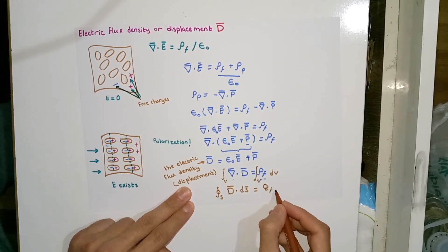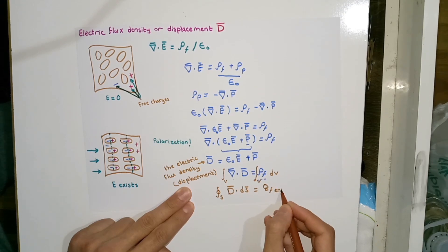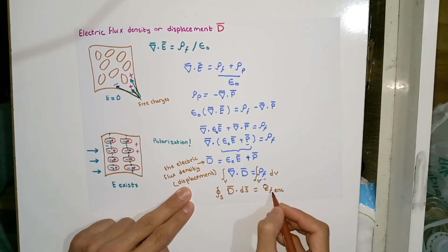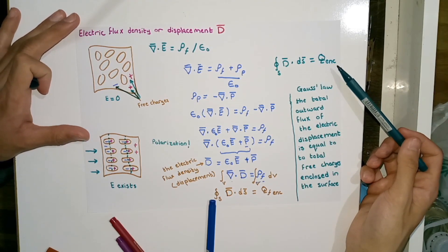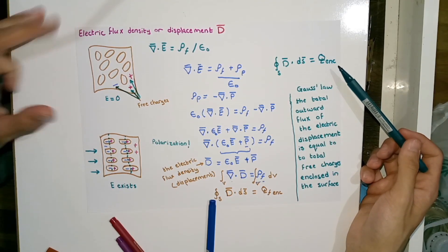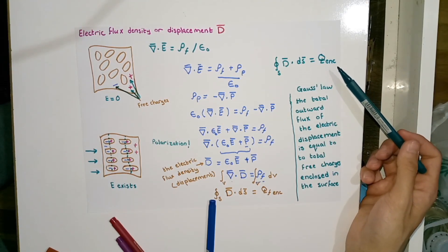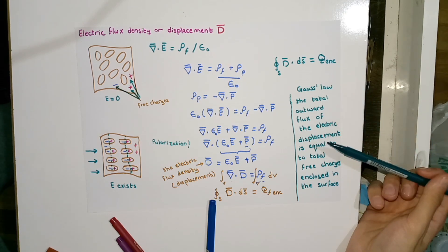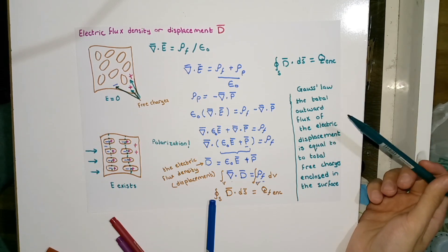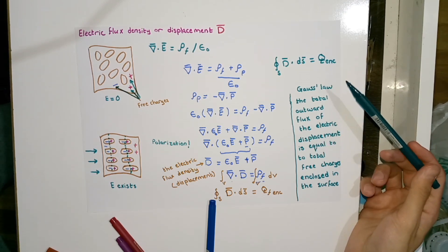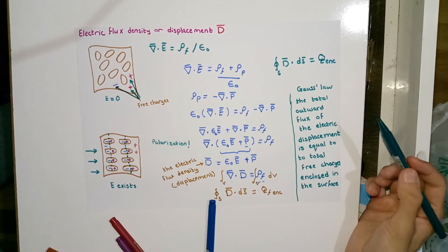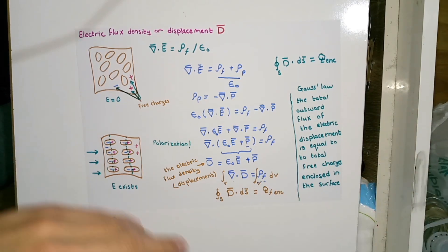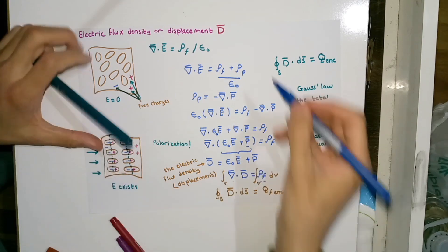I use the subscript F to denote free and the subscript enc to denote enclosed. This is Gauss's law, which states that the total outward flux of the electric displacement D is equal to the total free charges enclosed in the surface.